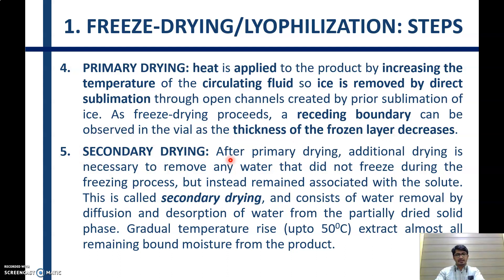The final step is secondary drying. After primary drying, additional drying is necessary to remove any water that did not freeze during the freezing process but instead remained associated with the solute. Secondary drying consists of water removal by diffusion and desorption of water from the partially dried solid phase by gradually increasing temperature up to 50 degrees Celsius to extract almost all remaining bound moisture from the product.